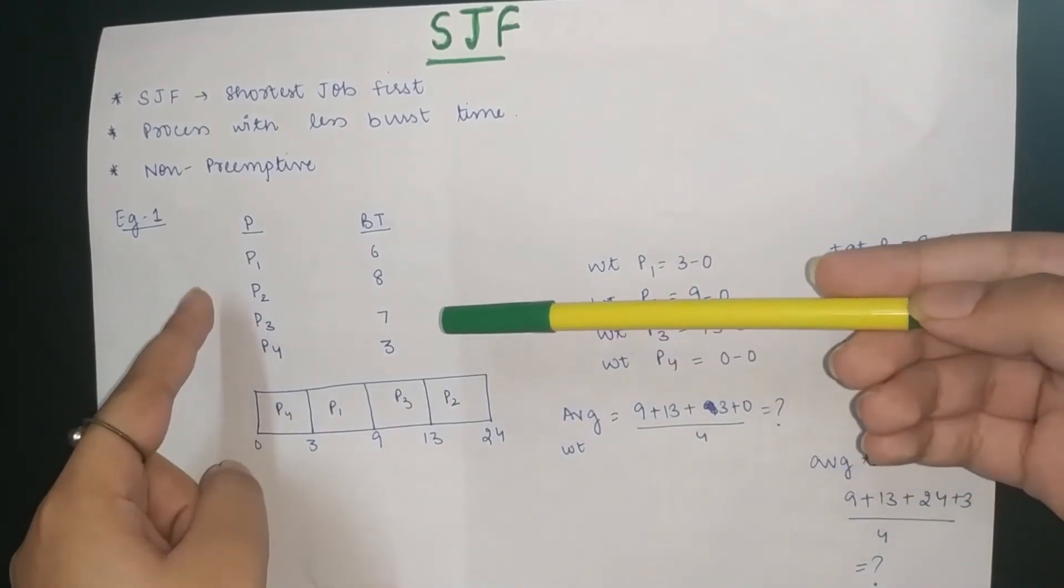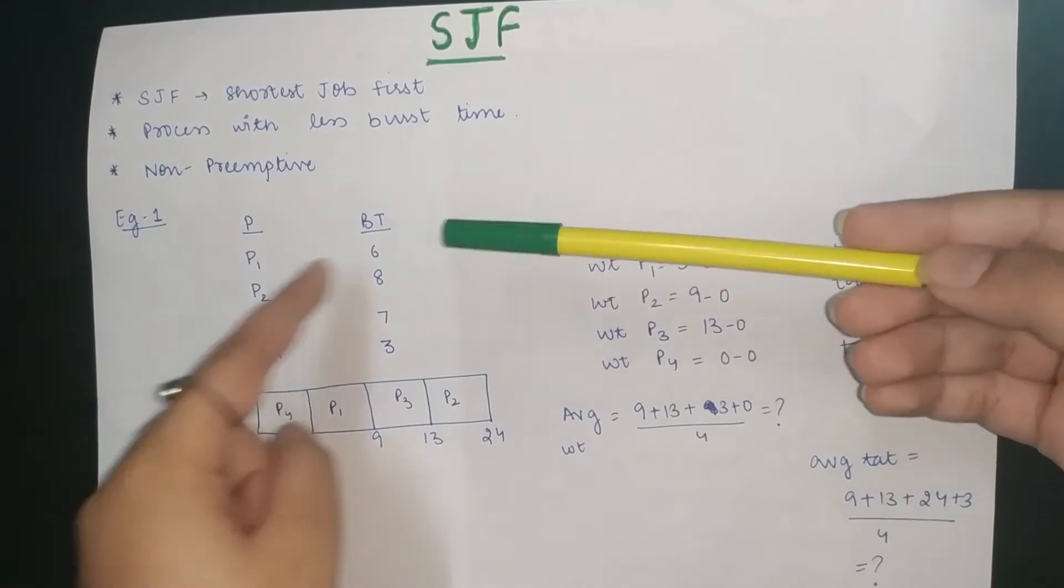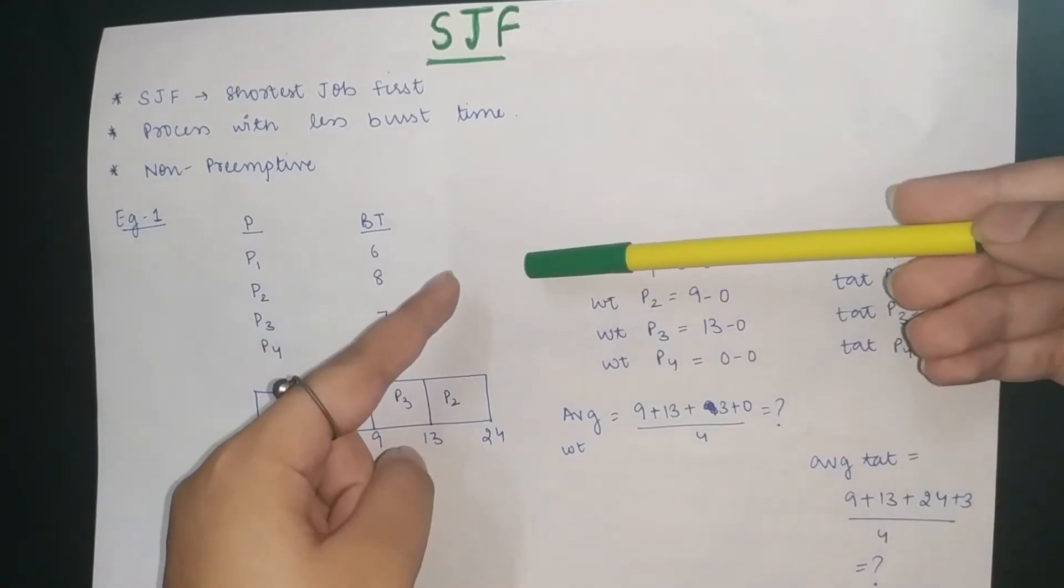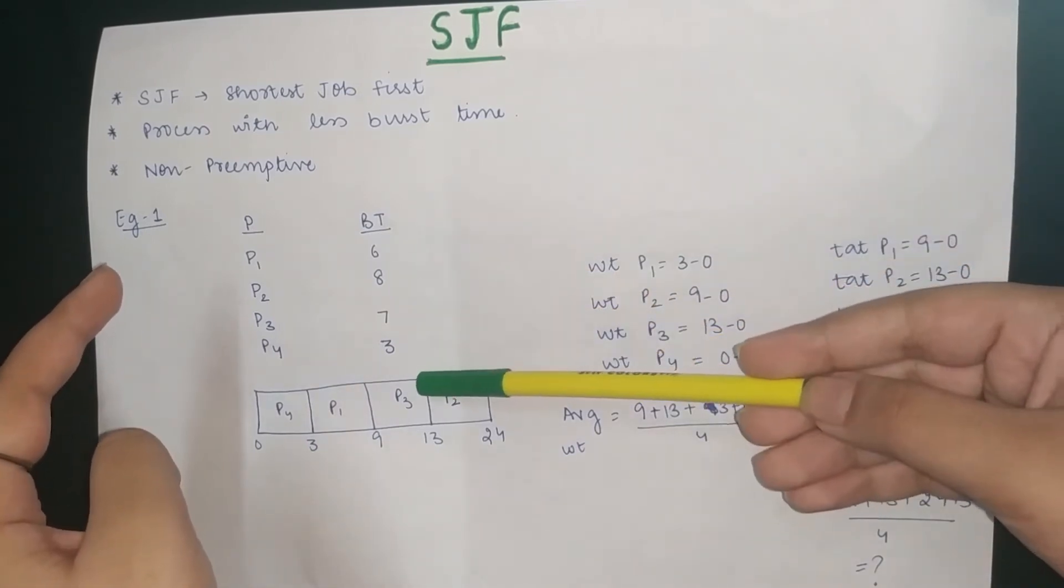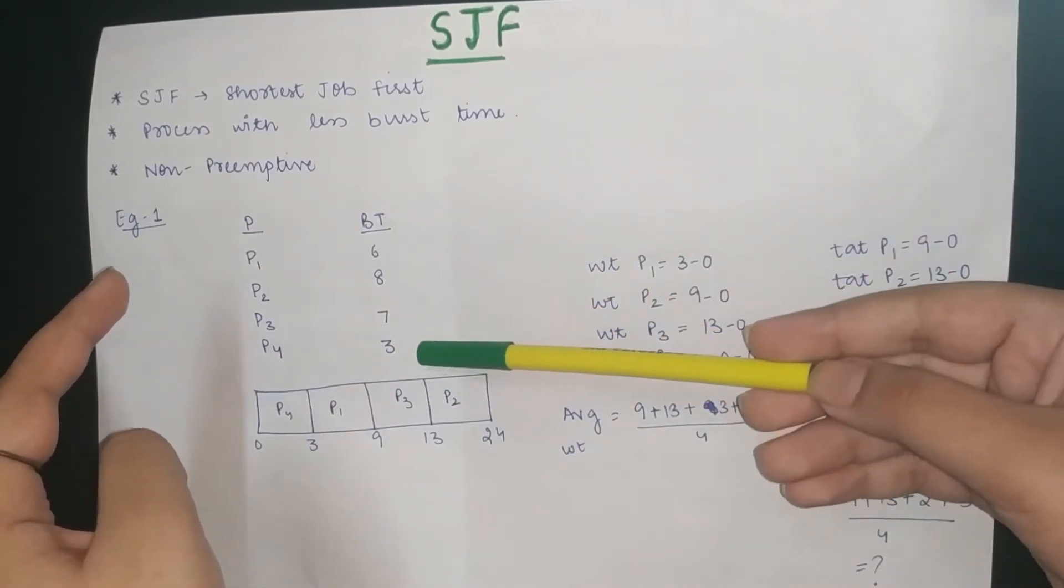For example, P1, P2, P3, and P4 is a burst time. So we will assume the arrival time: 6, 8, 7, 3. The least burst time is P4.